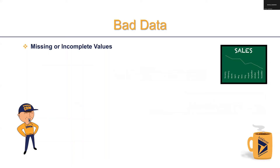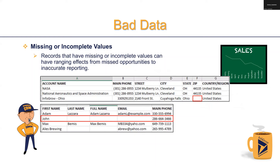The next classification of bad data is missing or incomplete values. Records that have missing or incomplete values can have ranging effects from missed opportunities to inaccurate reporting. As we can see in the example, we have a record for John — the only information we have is a phone number. How do we include John in an email list for a campaign if we don't have an email? We don't even have a last name. And what if this number is a general line to a 5,000-plus employee company? Locating the rest of John's details could be a wild goose chase.